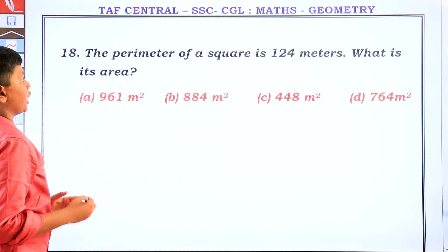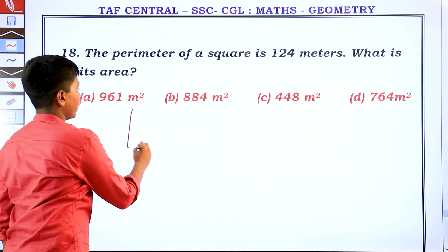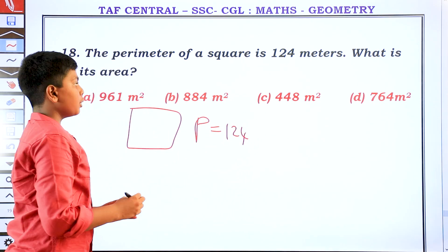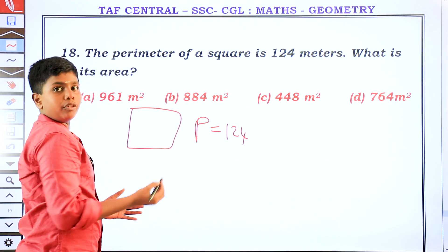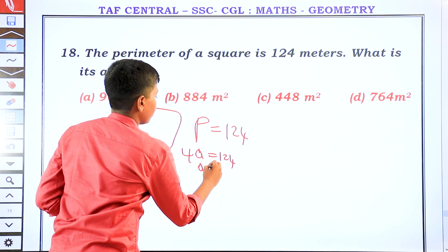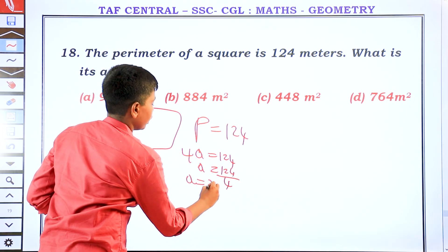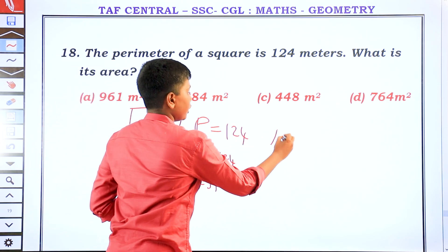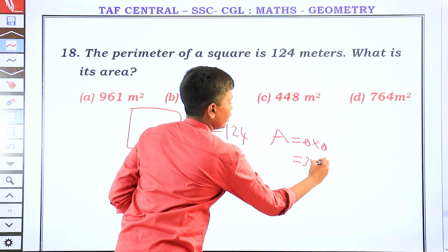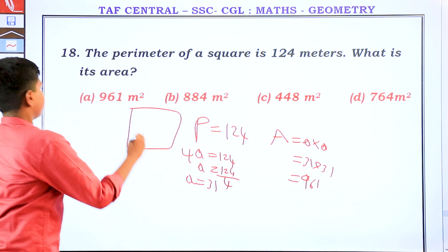The perimeter of a square is 124 metres. What is its area? Using the perimeter formula: 4a equals 124, so a equals 124 by 4, which gives a equals 31. The area equals a into a, so 31 into 31 equals 961 square metres. This is the answer.